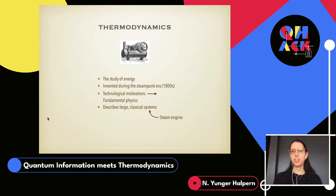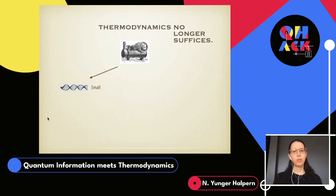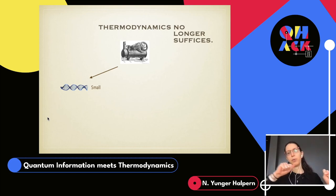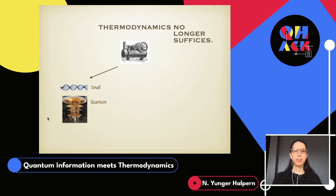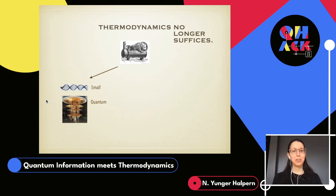Today's transformative technologies look a little different. We have great control over small systems. For instance, here's a single strand of DNA — you can use lasers to trap one end of the strand and pull the other end, and measure the work required to stretch it through a given distance. Technologies that are up and coming now are quantum. This is a dilution fridge belonging to IBM, in which IBM cools down one of its quantum computers.